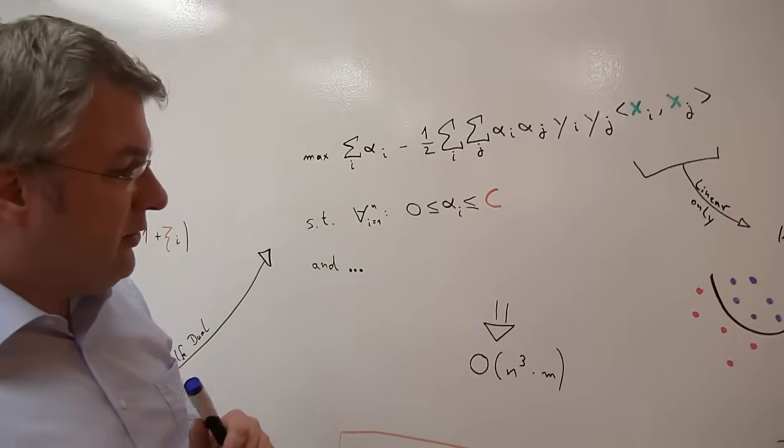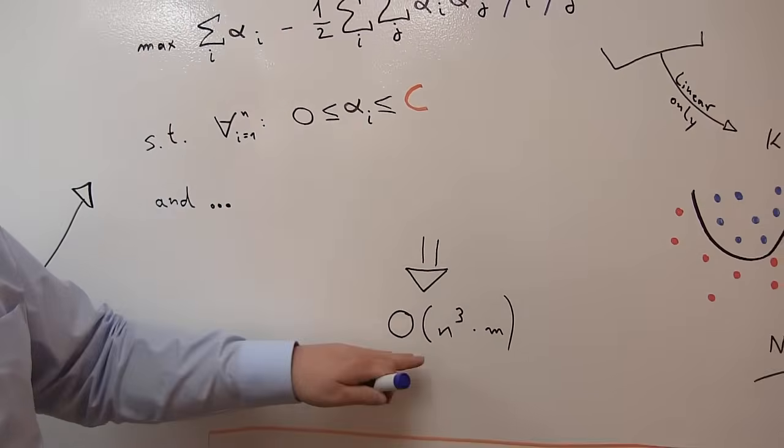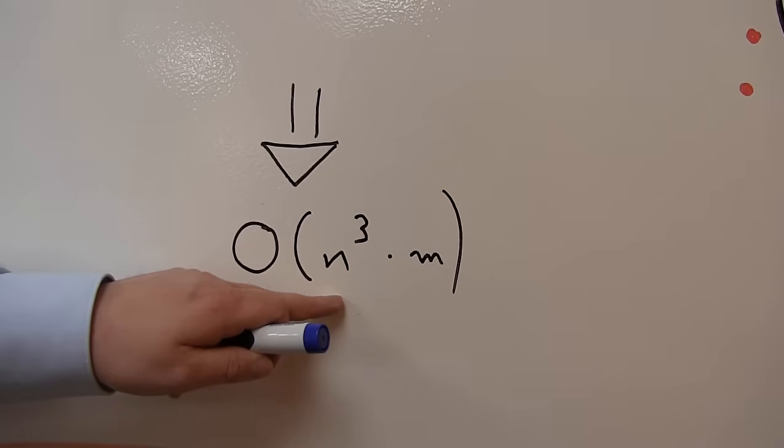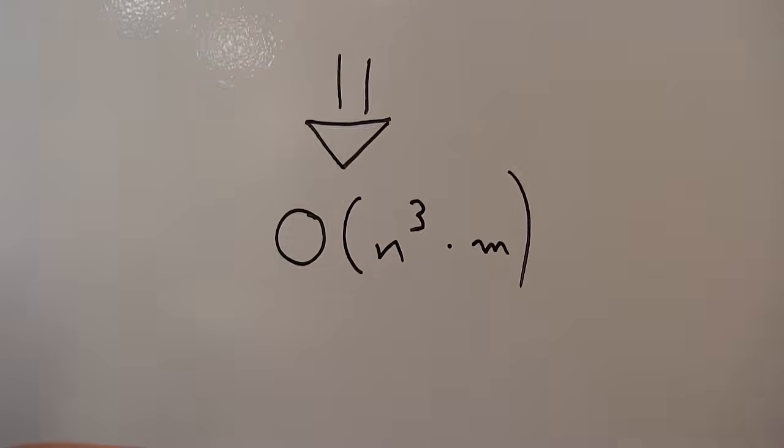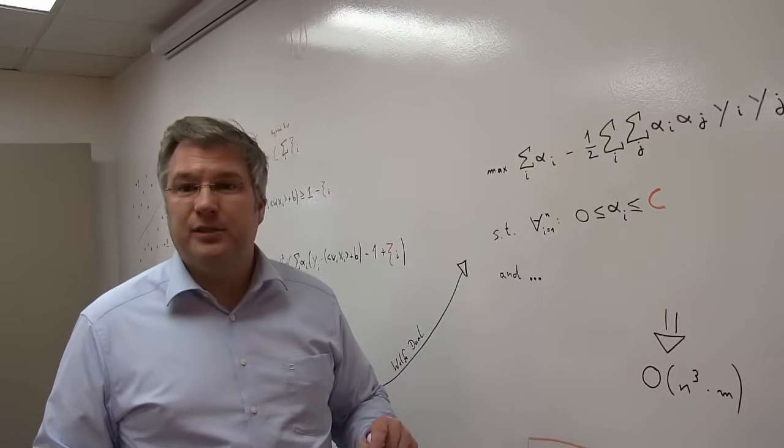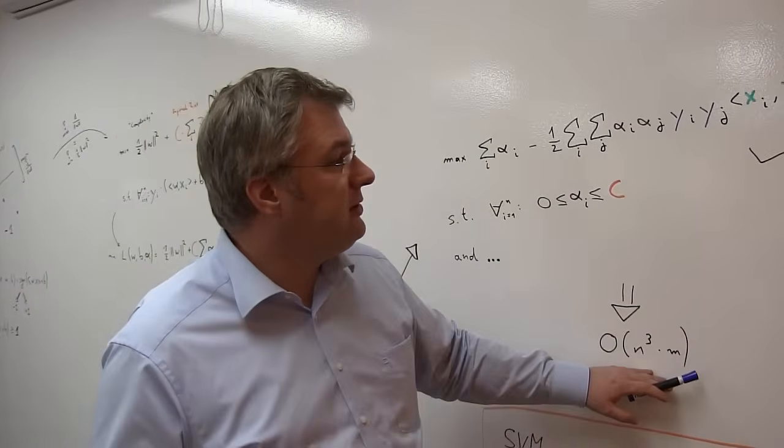So two more things which are interesting on SVMs. First thing is, it's very efficient. So to optimize this function, typically you're ending up with a cubic runtime. So if n is the number of data points you have, that means that really the runtime is to the power of three, but it's linear in the number of dimensions. And that's pretty good, actually. Adding additional dimensions to your data space is not very costly.